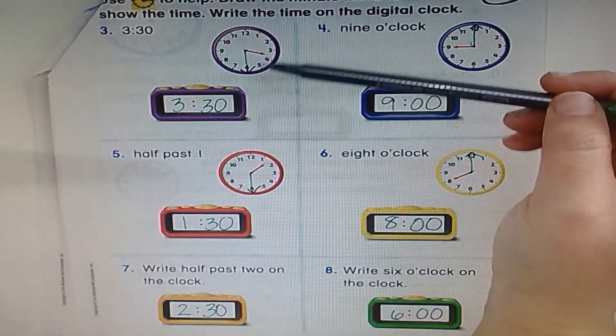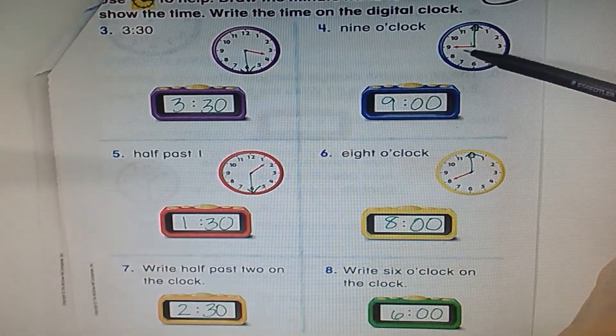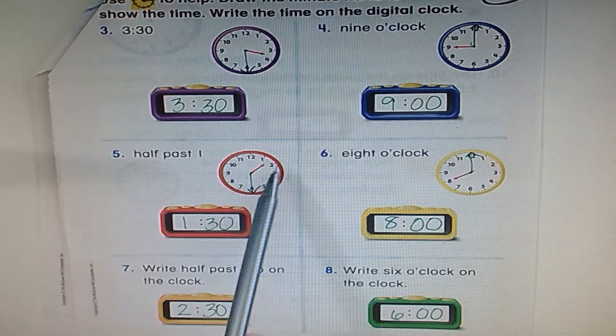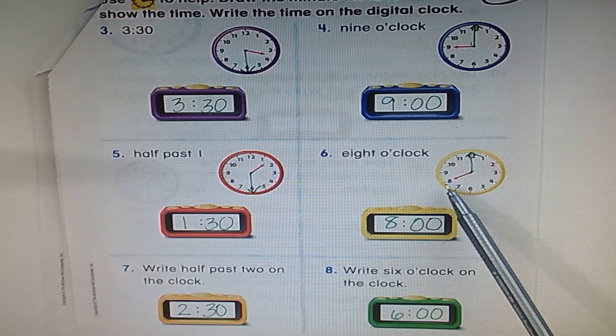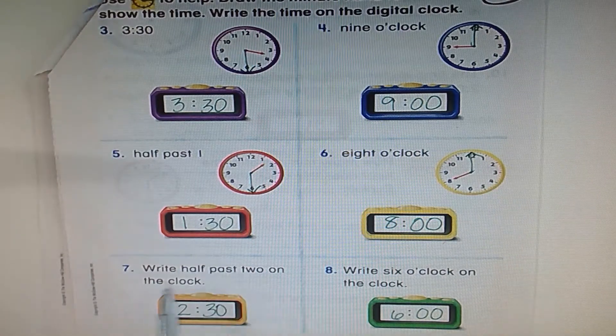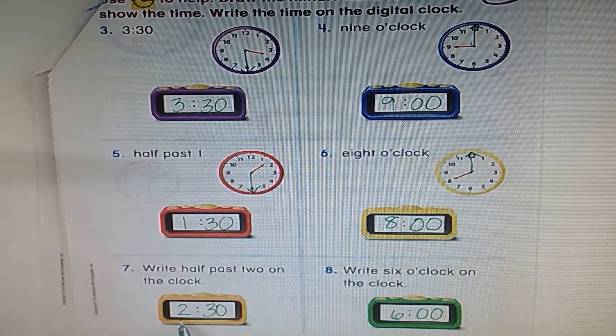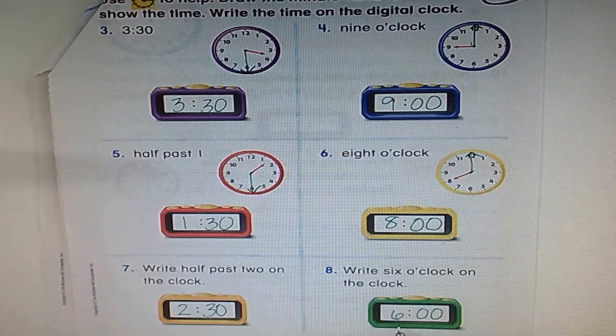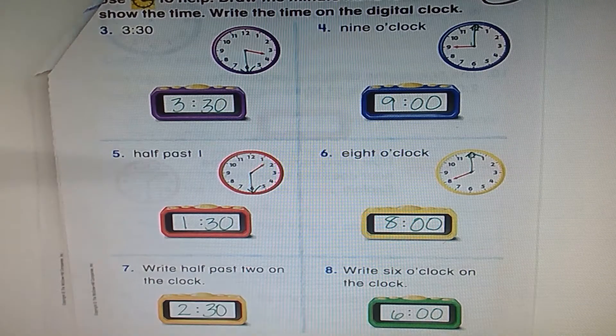This clock shows 3:30 because it's halfway to the four. This one's pointing directly at the nine, so it's nine o'clock. This one is pointing between the one and the two, so it's 1:30. This one's pointing directly at the eight, so it's eight o'clock. Right here, this was a tricky one. It says write half past two on the clock. 2:30. Write six o'clock on the clock. Six o'clock or six zero zero, but we say six o'clock. Excellent work guys.